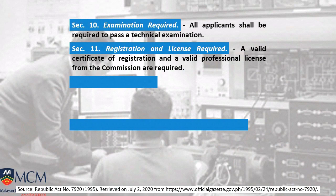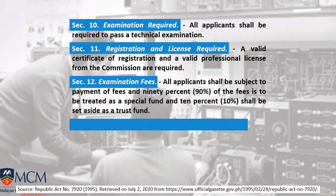Section 11 requires a valid certificate of registration and a valid professional license from the commission — from PRC. They are the only duly commissioned institution from the government which can certify you or give you a certificate of registration. Section 12 covers examination fees: 90% belongs to the special fund and 10% shall be set aside as a trust fund.